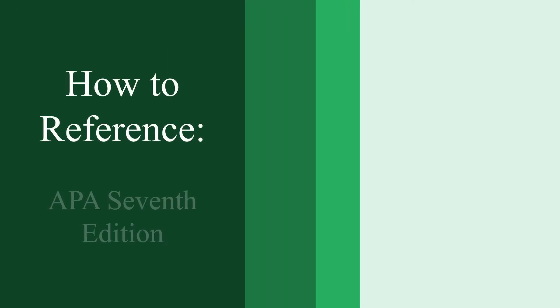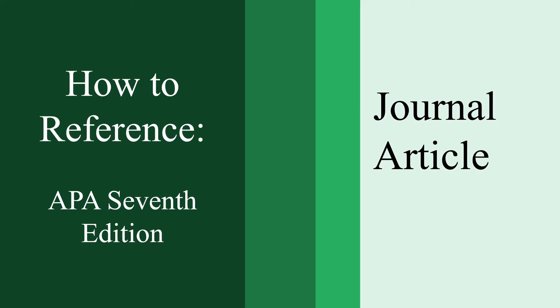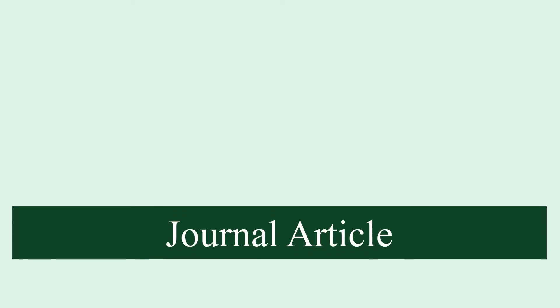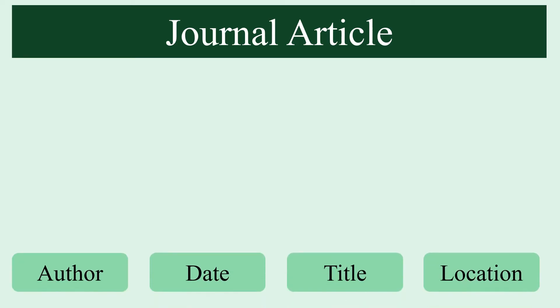How to reference APA 7th edition. There is perhaps no kind of source more frequently referenced and cited in academia than a journal article. Therefore today we're going to cover how to create a reference entry for a journal article, whether it's a print journal or an online journal. When creating a reference entry we're going to follow the standard prescribed order outlined by APA 7th edition.